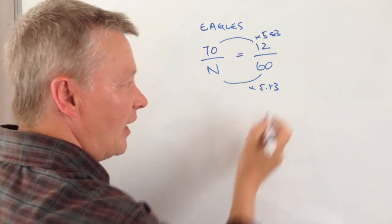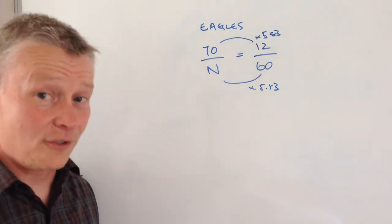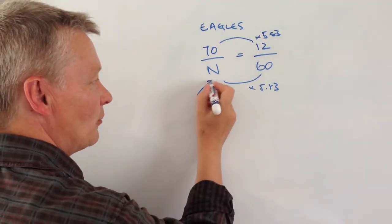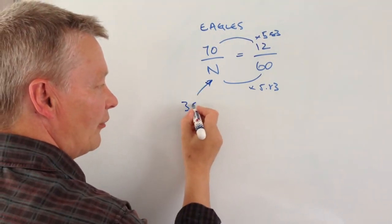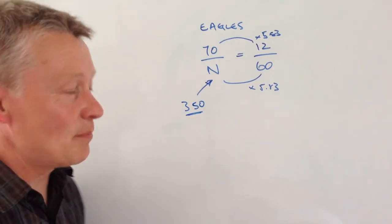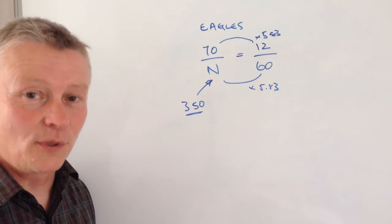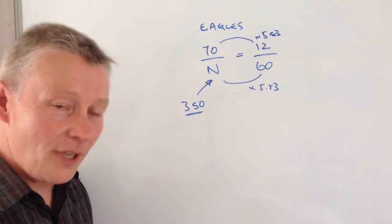it'll give you a total population of 350. So for this particular question, there were 350 eagles within the sanctuary. I hope that's okay for you. There are a few more examples of these types of questions in the rest of the playlist.